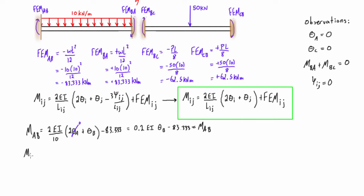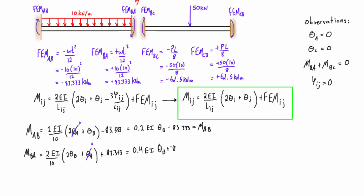Now we apply the equation a second time for M-BA. This time we put B for all the I positions and A for all the J positions — it switches around. The length is still 10 meters, giving 2θB plus θA, plus the fixed-end moment FEM-BA which is positive 83.333. Since θA equals zero, this simplifies to M-BA equals 0.4EI times θB plus 83.333.